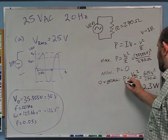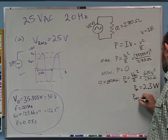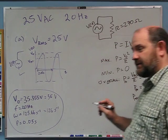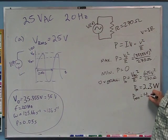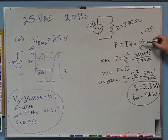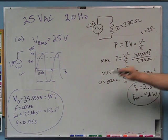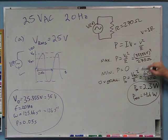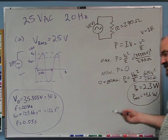The maximum power is 4.6 watts, which is exactly 2 times the average power of 2.3 watts. That makes sense because V_0 is root 2 times V_AC, and when you square it, it becomes a factor of 2. So the max is always twice the average for a sine wave. That's part B.